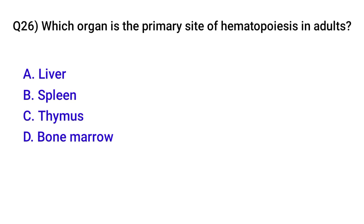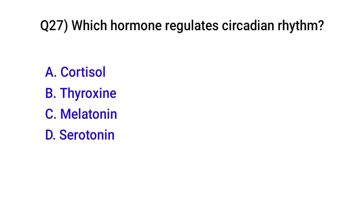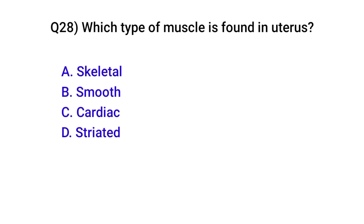Question number twenty-six: Which organ is the primary site of hematopoiesis in adults? Correct option is: Bone marrow. Question number twenty-seven: Which hormone regulates circadian rhythm? Correct option is C: Melatonin.